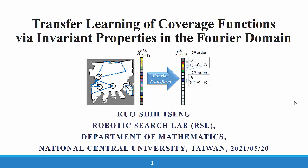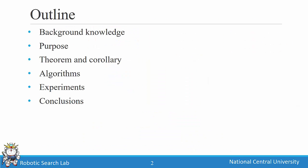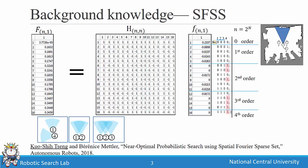This video presents the research entitled 'Transfer Learning of Coverage Functions by Invariant Properties in a Fourier Domain.' The author is from the Robotic Search Lab in the Department of Mathematics at National Central University, Taiwan. The presentation will cover background knowledge, the purpose of this research, theory and corollaries, experiments, and conclusions.